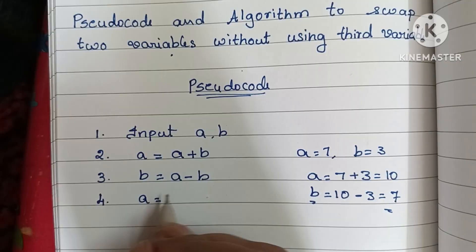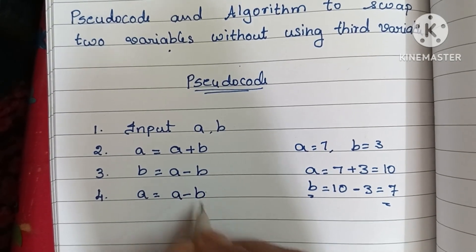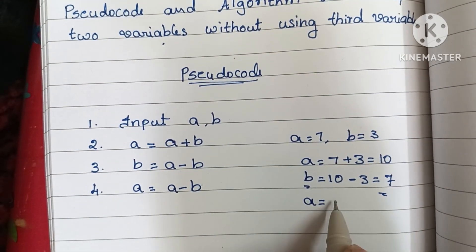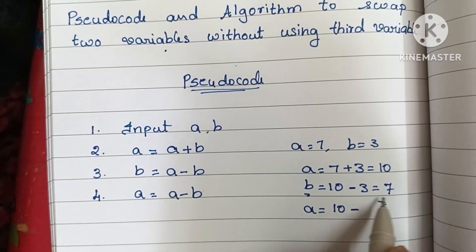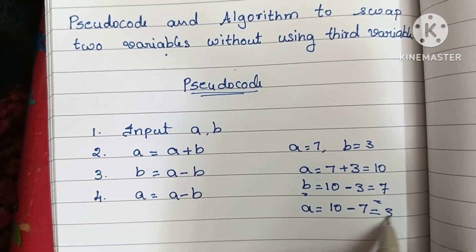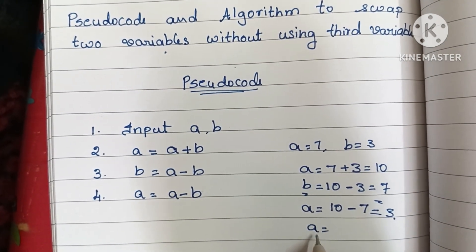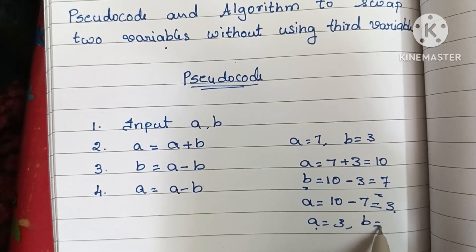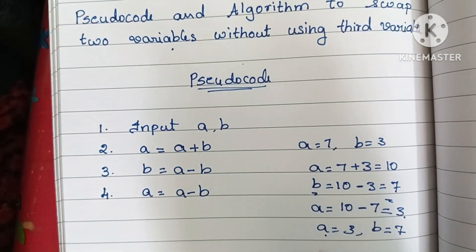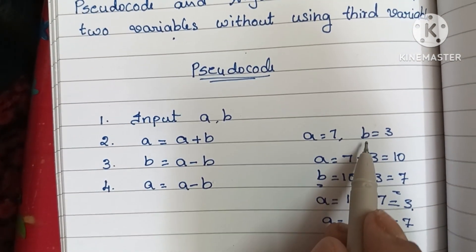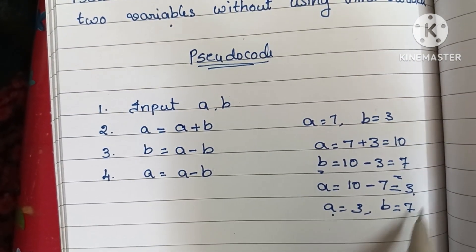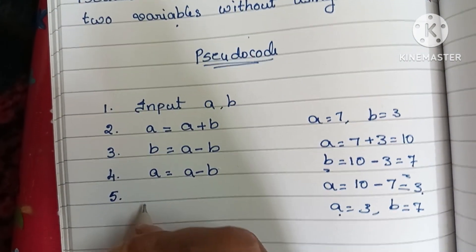Next, we find the new value of a using a minus b. The current a is 10 and the current b is 7, so a becomes 10 minus 7 equals 3. Now a is 3 and b is 7 — the values are swapped. Initially a was 7 and b was 3; now a is 3 and b is 7.